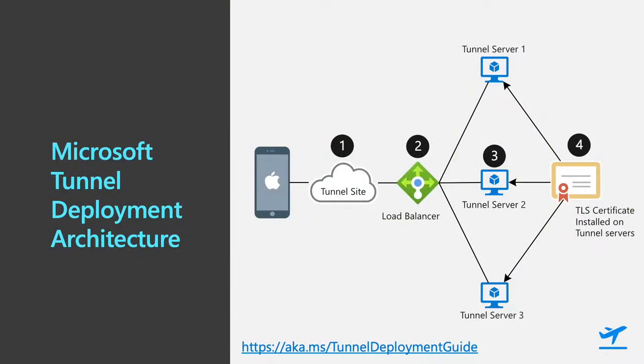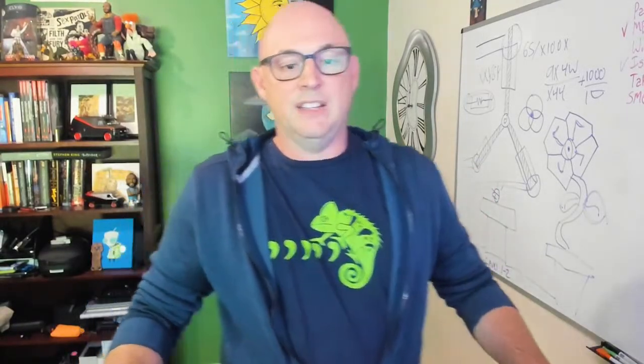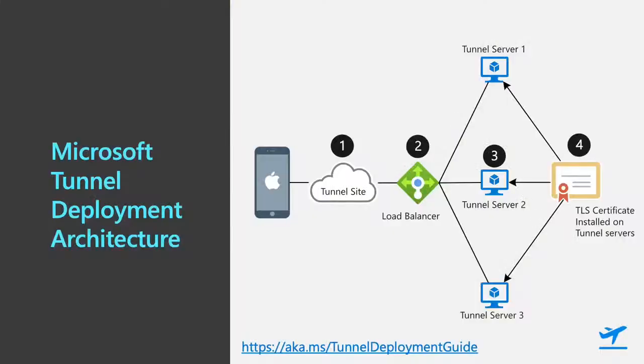The last part you'll need is a TLS certificate. This is the one thing that seems to trip people up more often than not. The thing you really need to understand is that the site name you create is the same FQDN that needs to be in the SAN on the certificate. So if I set up my site and configure it for tunnel.microsoft.com, then the SAN on my certificate needs to be tunnel.microsoft.com. That cert could be public or private.